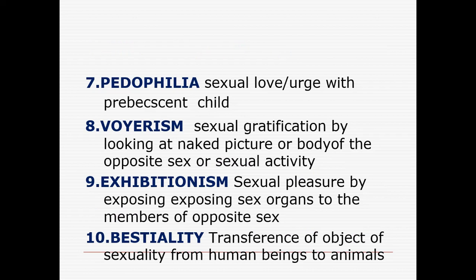Transvestites also have a close association with sexual or autoerotic asphyxia, like masochists. Number seven perversion is pedophilia — sexual love and urge towards a pre-pubescent child, meaning those young children under 10, 11, or 12 years of age who are targeted by pedophiles. Number eight is voyeurism — sexual gratification or pleasure by looking at the naked picture or body of the opposite sex. These people are also called peeping toms.